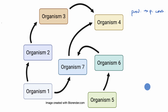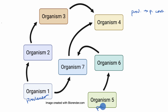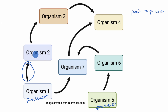Now in a food web, the giveaway that something is a producer is that it doesn't have arrows coming into it — it only has arrows coming out of it. So organism one is a producer. Organism five is also a producer. Where are they getting their matter and energy from? They're getting their matter from the environment, and the energy in most cases is coming from the sun. The things that eat the producers are primary consumers, so these arrows go from a producer to a primary consumer.